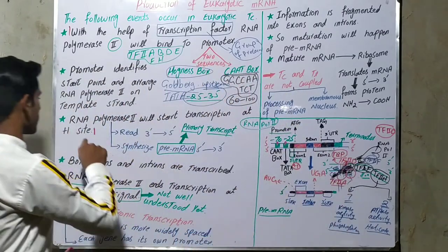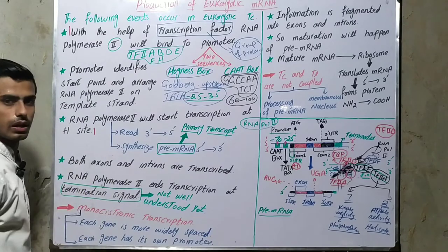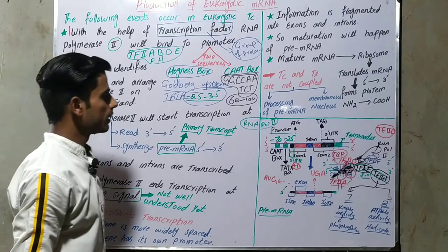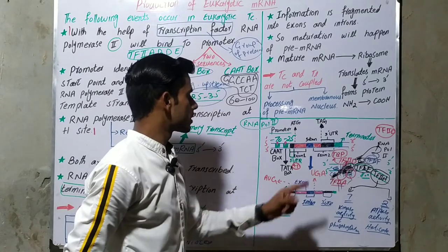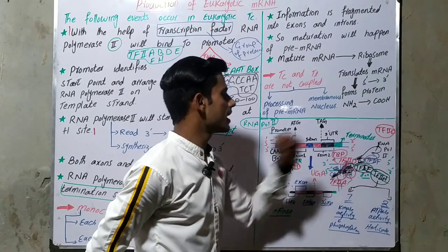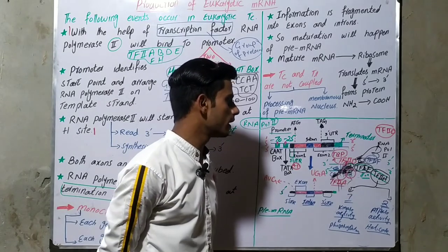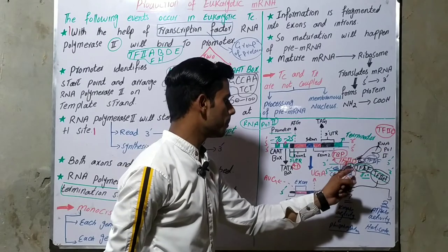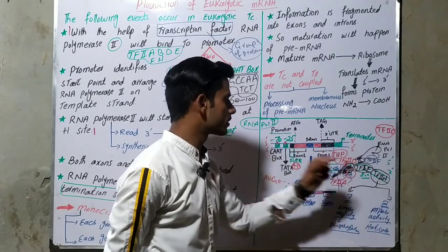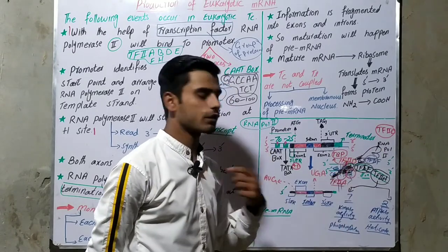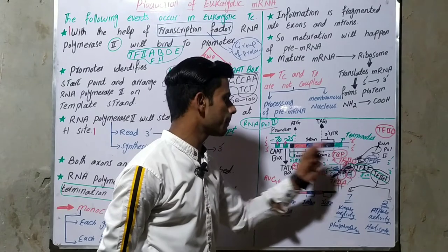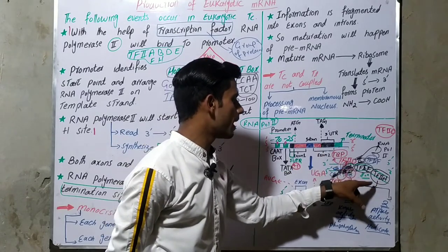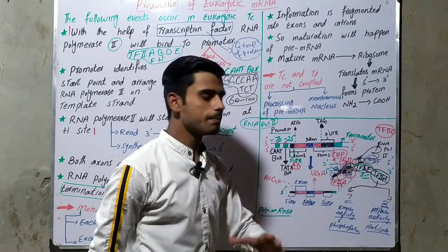The two-protein set of TF2H has ATPase and helicase activity — it uses ATP and unwinds the DNA double strand into single strands. The seven-protein set has kinase activity, meaning it causes phosphorylation of the C-terminal tail of RNA polymerase 2. This phosphorylation signals RNA polymerase 2 to start transcription at the +1 site.